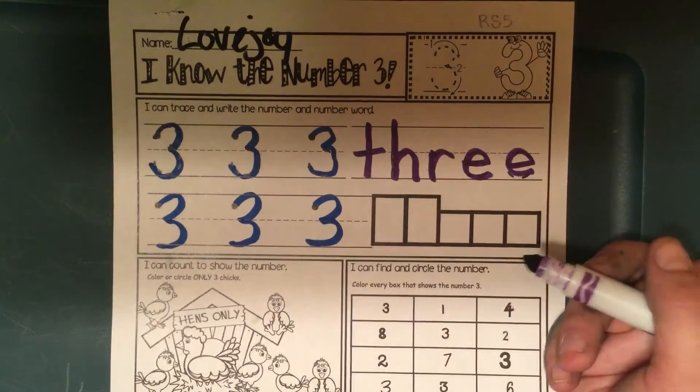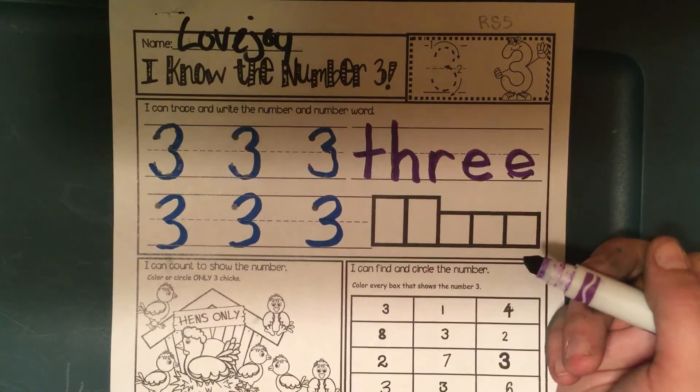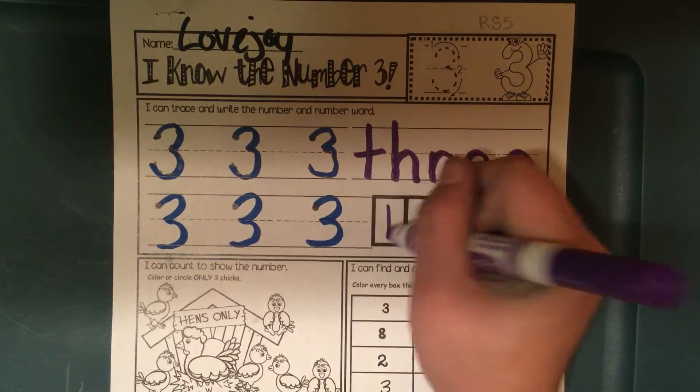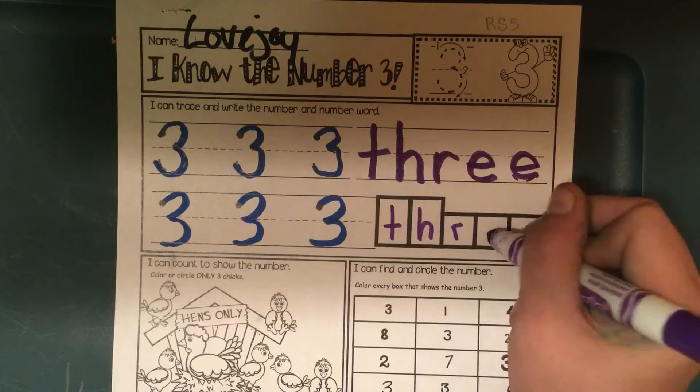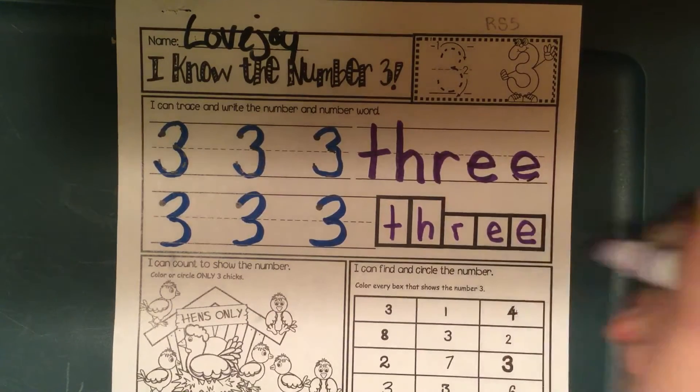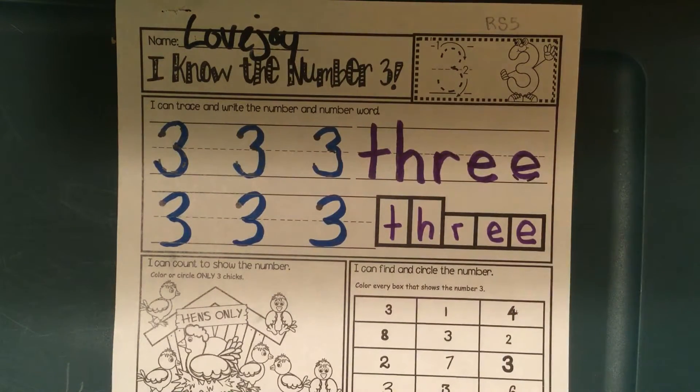And I'm going to box it up. Each box is going to have one letter in it. So the first letter, T-H-R-E-E. Just like that. And that's how we spell 3.